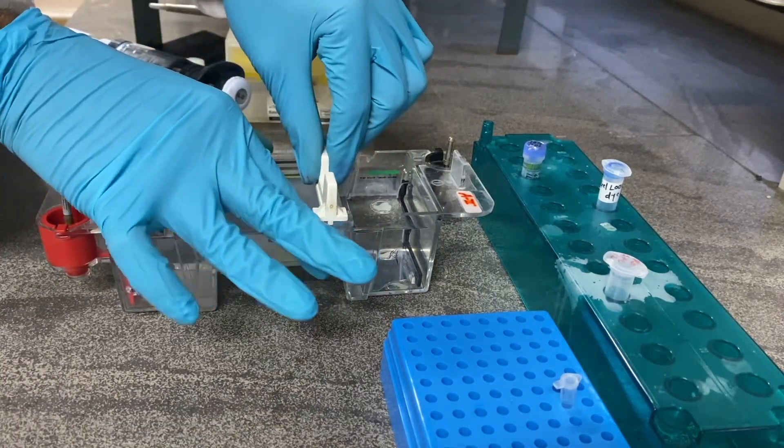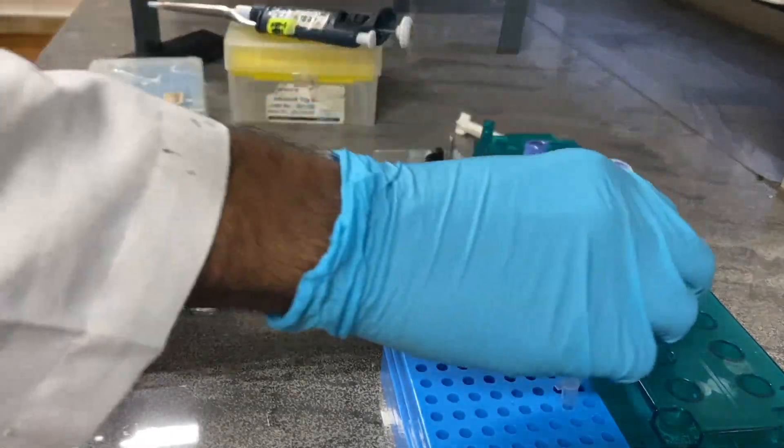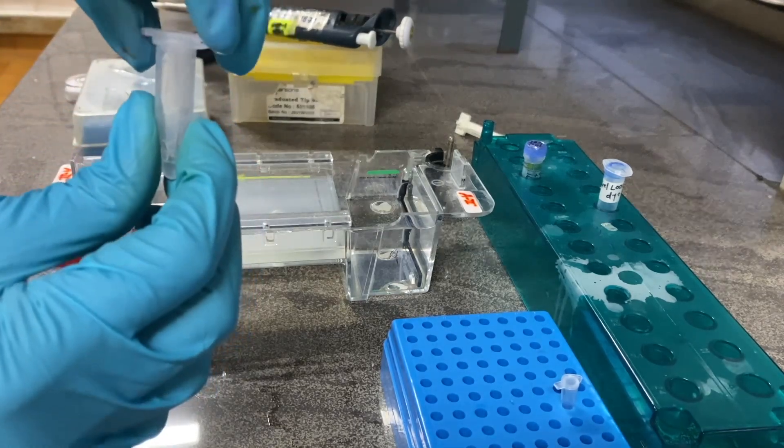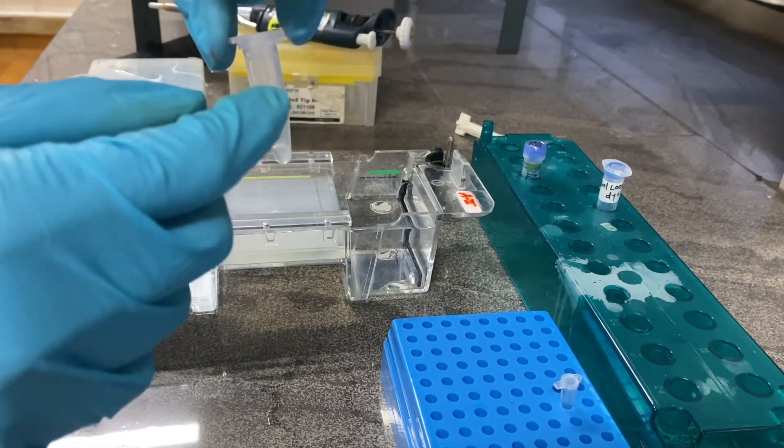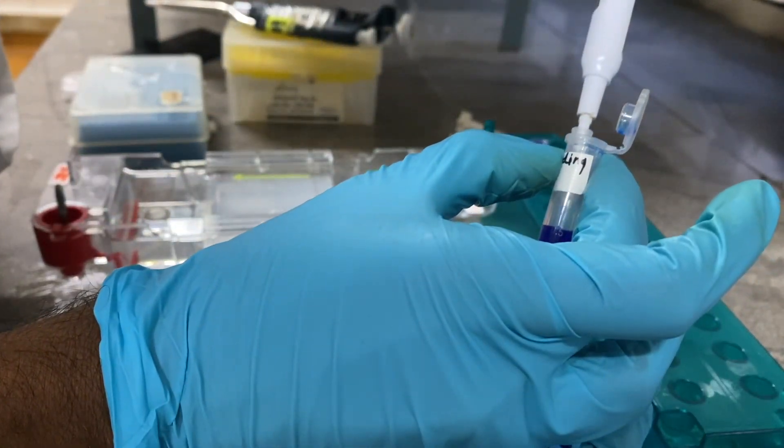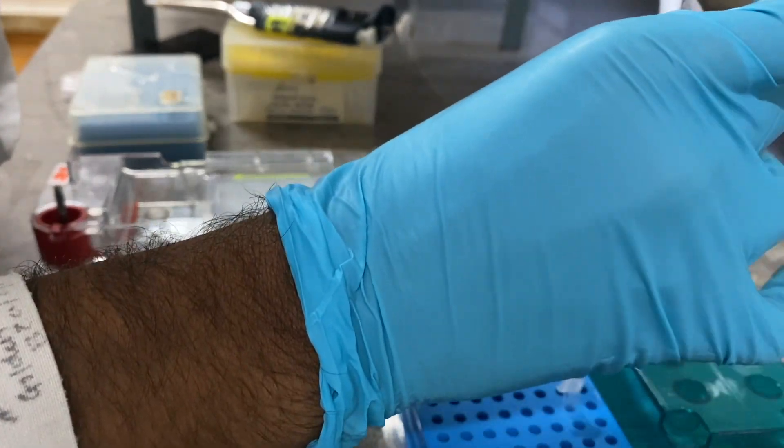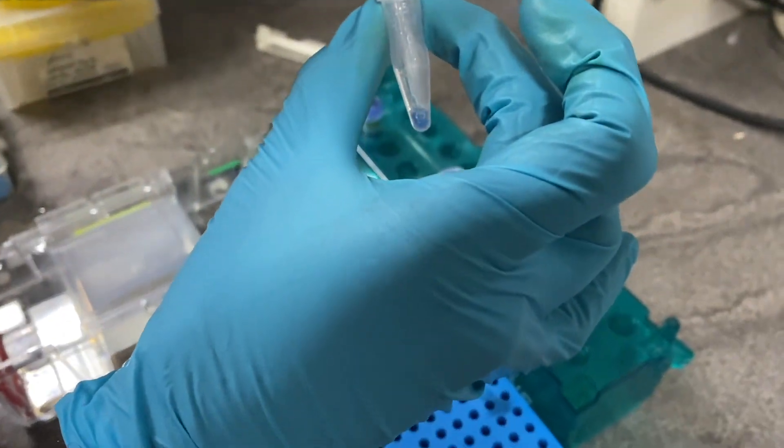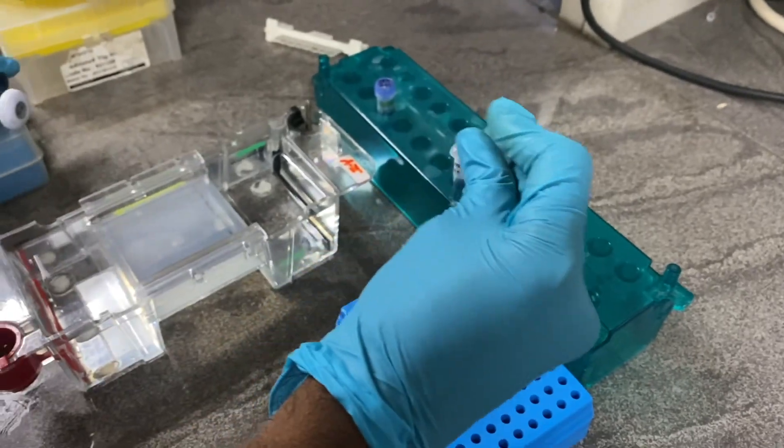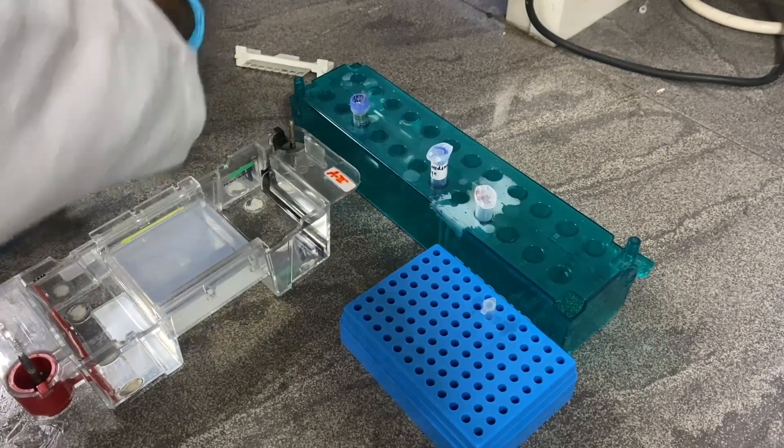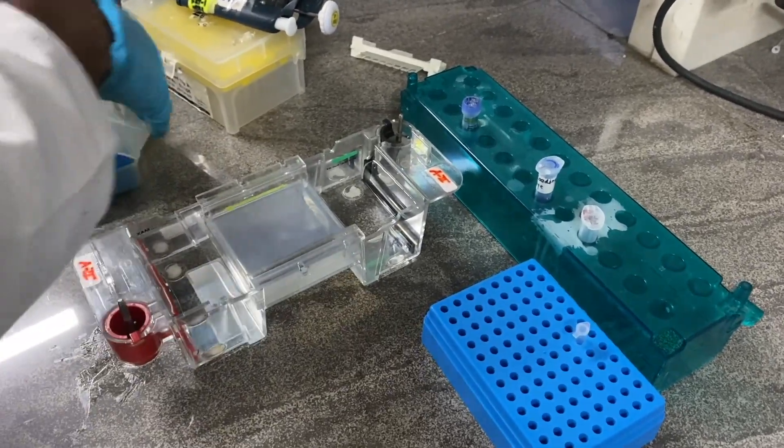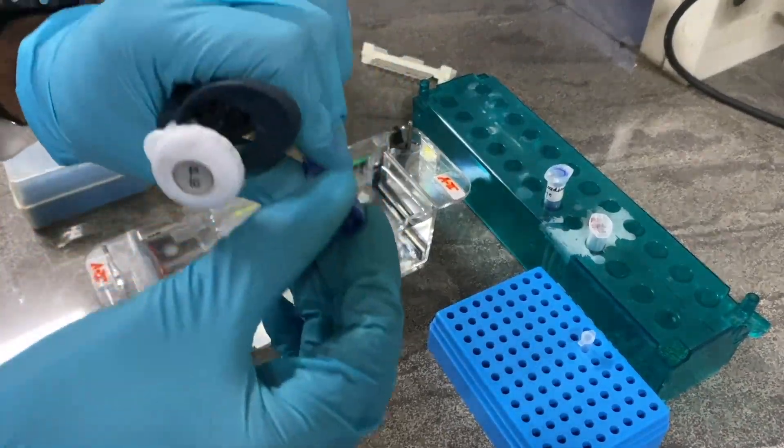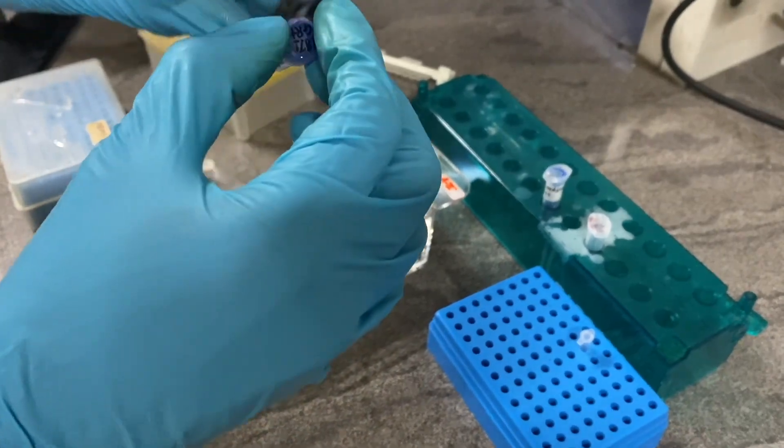I have prepared 1% gel. Now we will load our reaction. Some people may inactivate the restriction digestion reaction and today I am not going to inactivate the restriction digestion reaction. We will add the gel loading dye into it and I will load entire reaction. The preparation of gel is depending on your insert. If your insert is very small you can go for higher percent of gel. Here my insert is bigger so I have gone with a lower percent of gel.